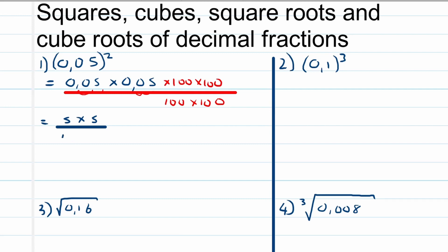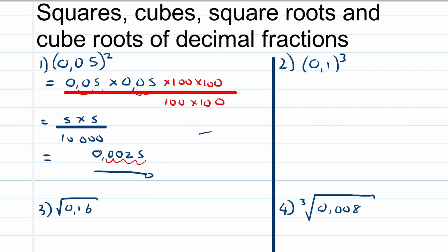This gives us an answer of 25, but remember the decimal places need to be in order. We can see it's 25 over 10,000, so we need to move our comma one, two, three, four places to the left. Our final answer will be 0.0025.